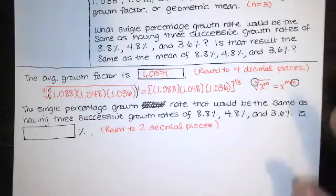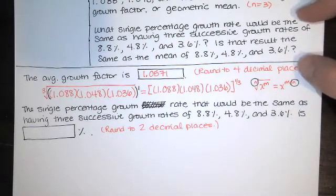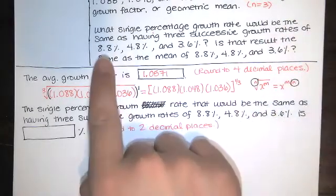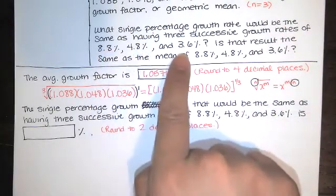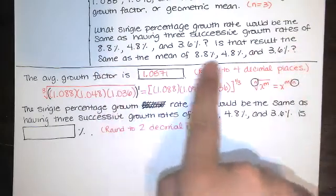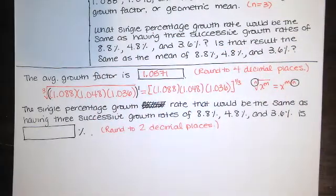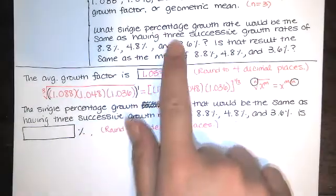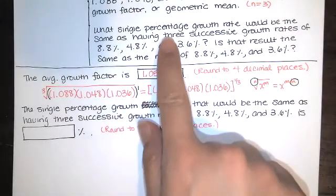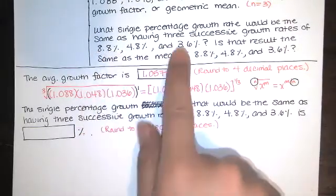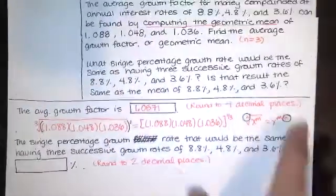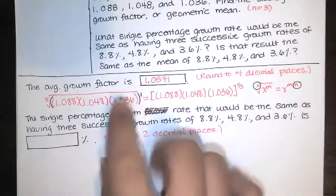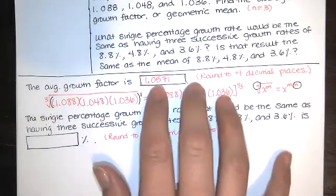Okay, then let's look at the rest of the question. It says, what single percentage growth rate would be the same as having three successive growth rates of this, this, and this? And then it asks, is that the same as the mean of those three numbers? Well, the single percentage growth rate that would be the same as having the three successive growth rates of these guys, which, remember, correspond to these numbers here, comes from just looking at this and finding the percentage that would go with that.